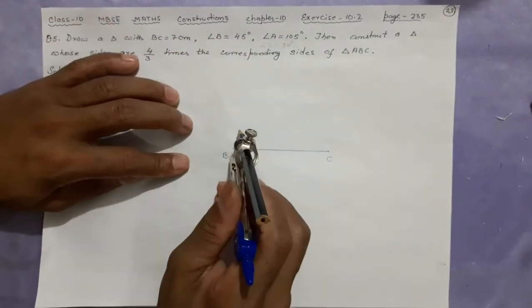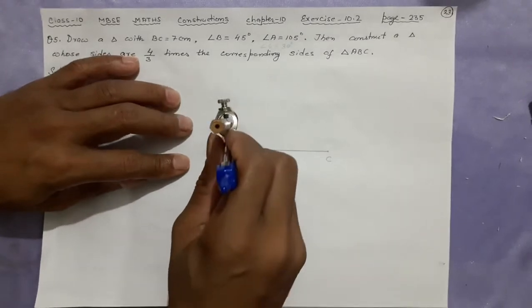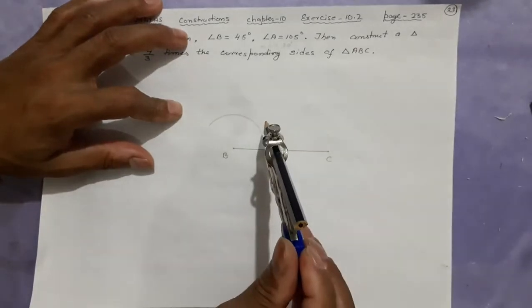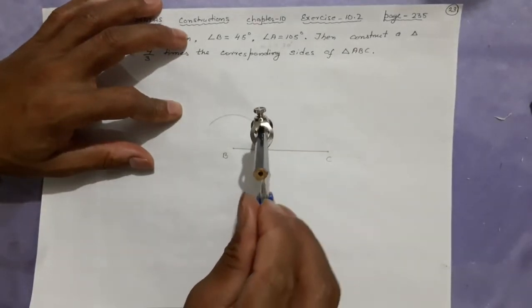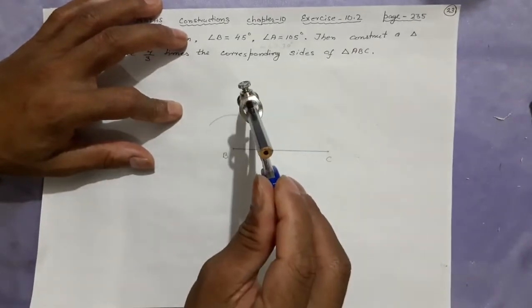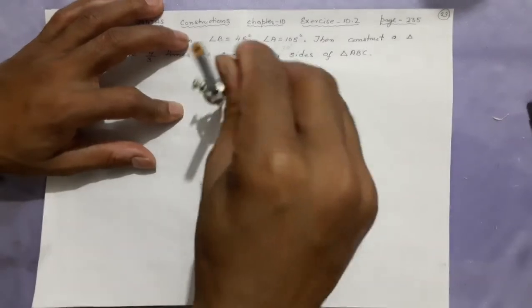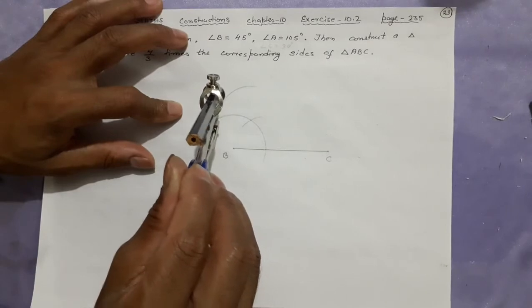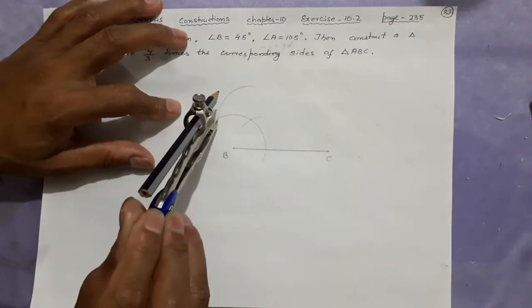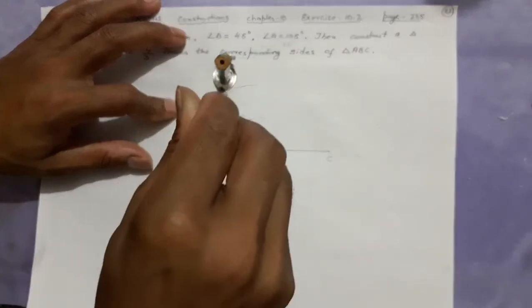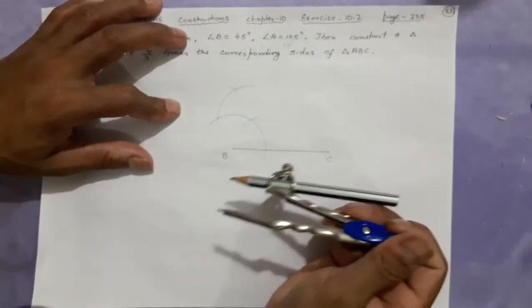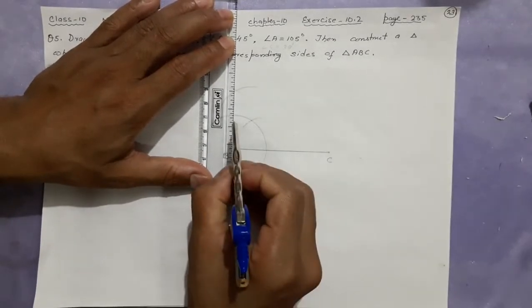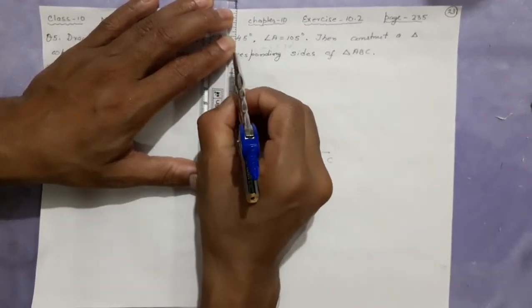Now, angle A is 105 degrees — we will not use that. We'll make angle B equal to 45 degrees. Making 45 degrees is easy — it is half of 90 degrees. First make 90 degrees. You have to be good at making angles: 45, 60, 90, 120. After constructing the arcs, this will give 90 degrees — join it with a dashed line.